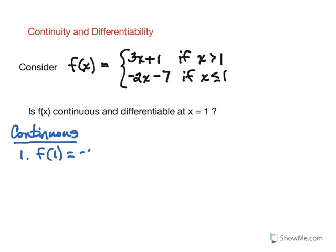It's the second piece that allows us to substitute in one. So we do get a y value of negative 9.